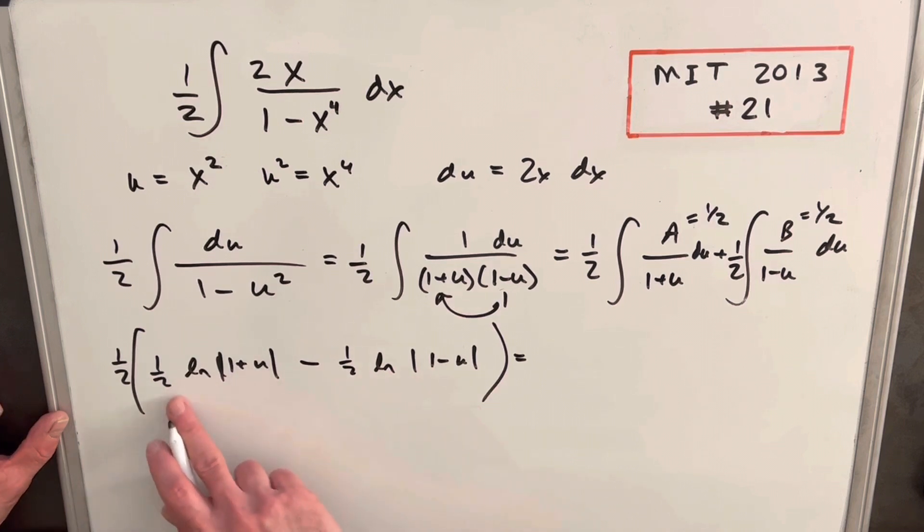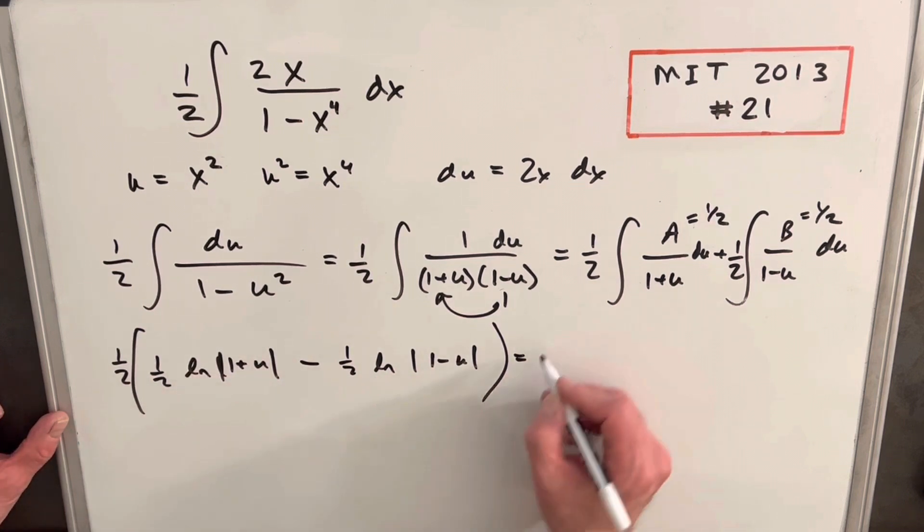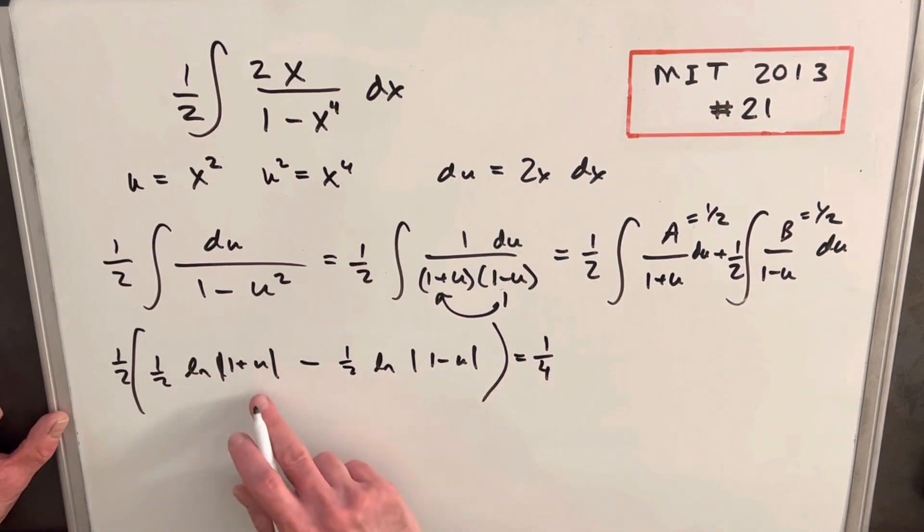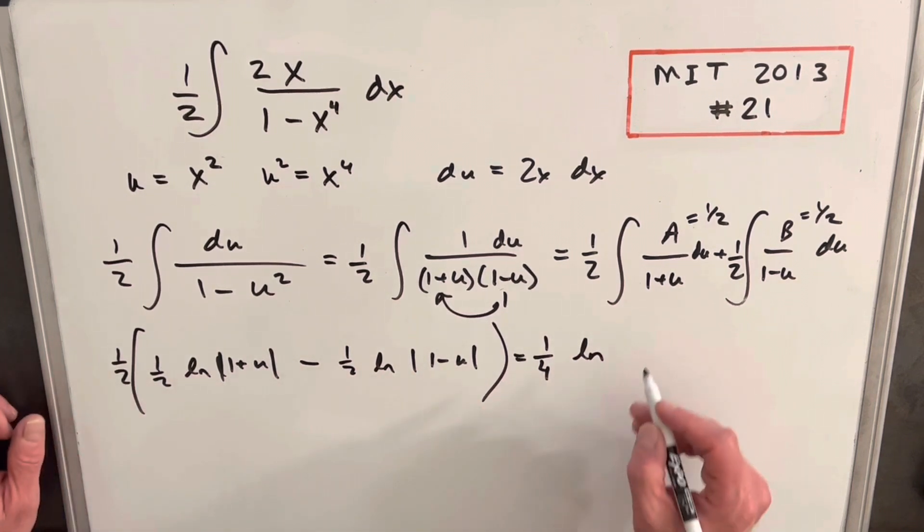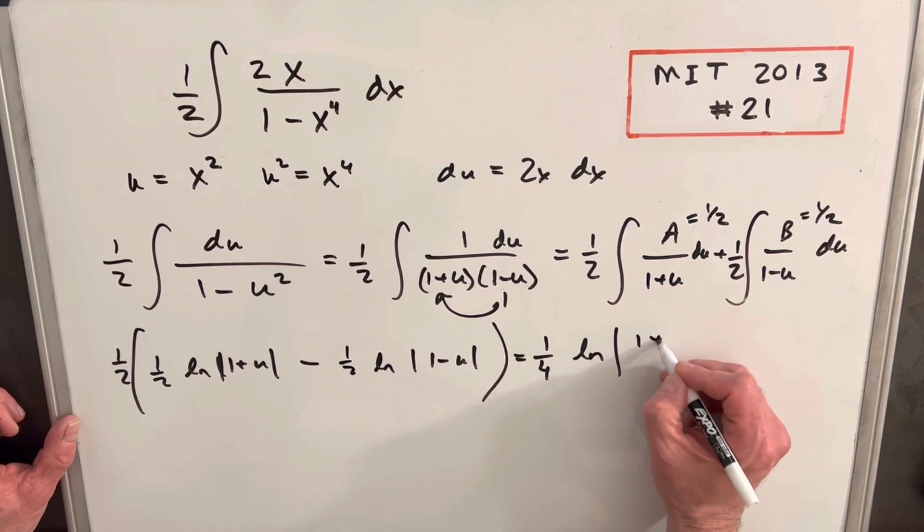Then the next thing I'm going to do, we're going to factor out this other one half. Okay, so we're going to have a one-fourth in front. And then I'm going to write this as a fraction using log properties with the minus sign. So we can write this as 1 plus u over 1 minus u.